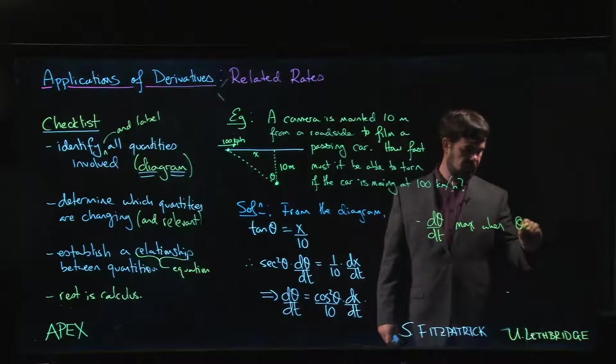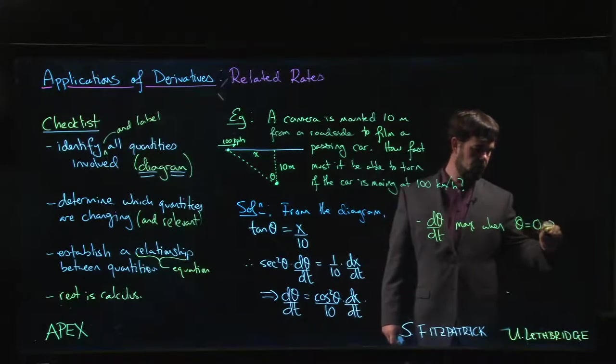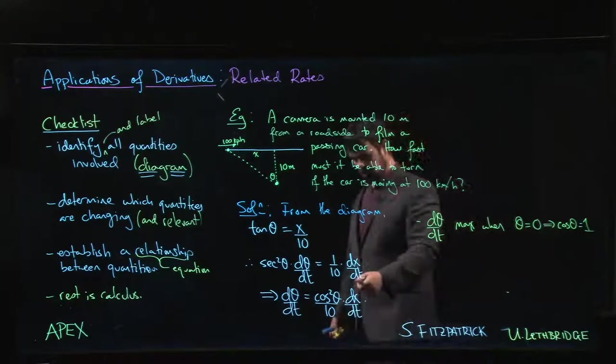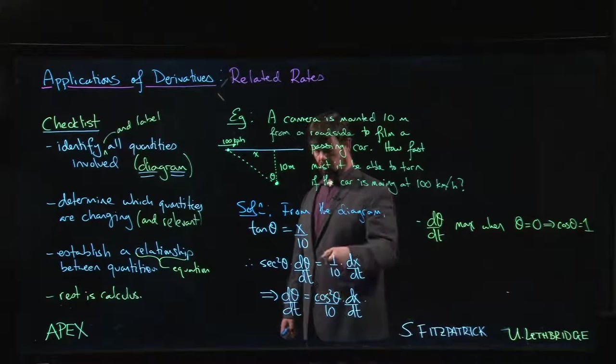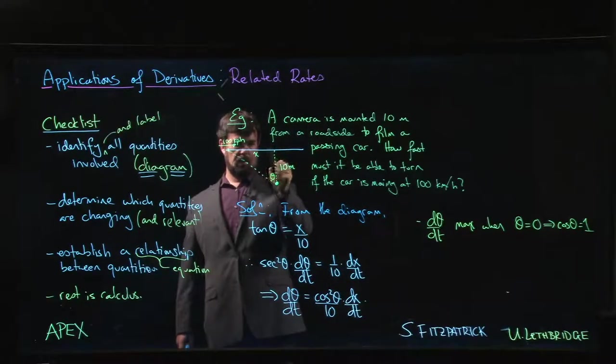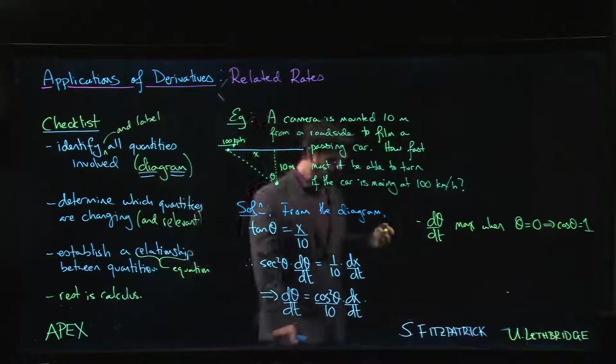If θ is equal to 0, cos θ will be 1. The maximum we get from cos squared is 1, and that's going to happen exactly at this point right here.